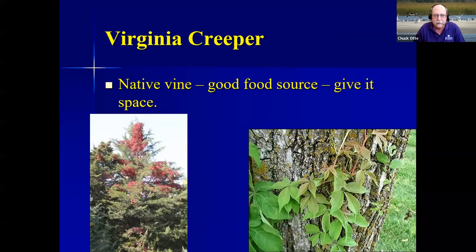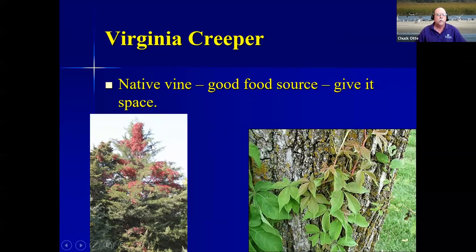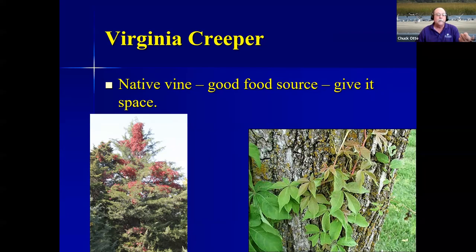Virginia creeper is a native vine that'll run up just about anything — it just loves to climb. It has great red fall color, and the plant has berries on it. I've seen wild turkeys taking the berries off this thing. Don't confuse it with poison ivy — Virginia creeper has five leaflets, poison ivy has three leaflets.